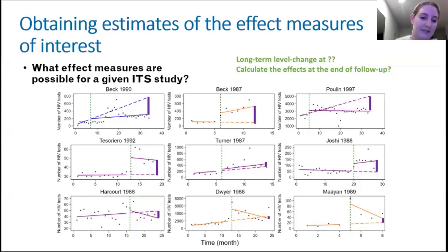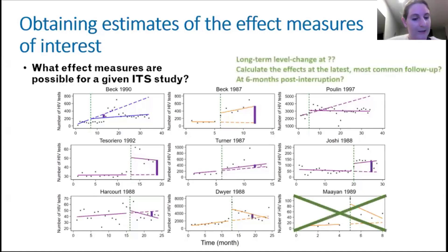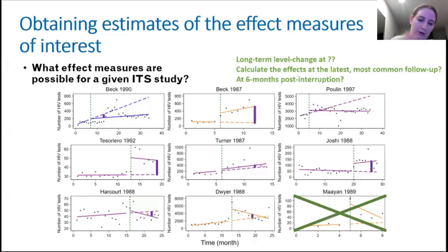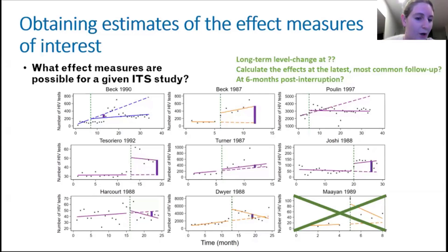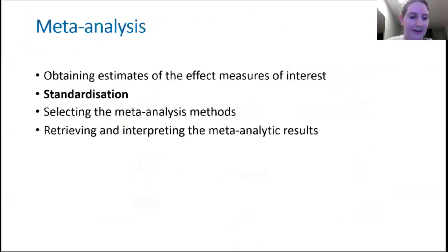When we come to interpret our meta-analytic effect, we have to make sure it takes into account the variable length of follow-up. One more option: perhaps we want to take advantage of as many studies as possible while also calculating level changes as late as we can. Here we might be interested in a six-month post-interruption level change, which is common across eight of the nine studies, so we'd only have to exclude one study. Those are a few options.